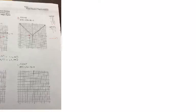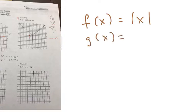Okay, let's look at number 3. f of x equals the absolute value of x, and g of x equals f of 4x plus 8 minus 2.